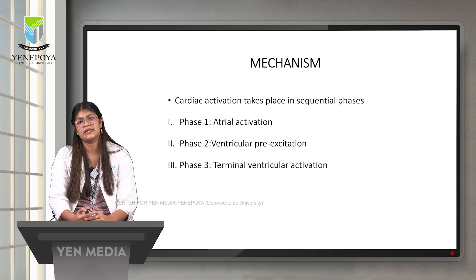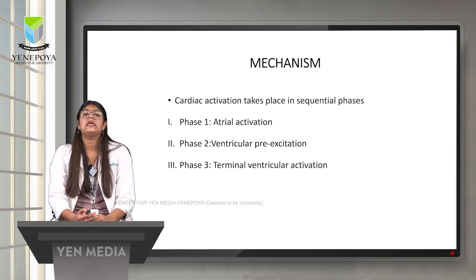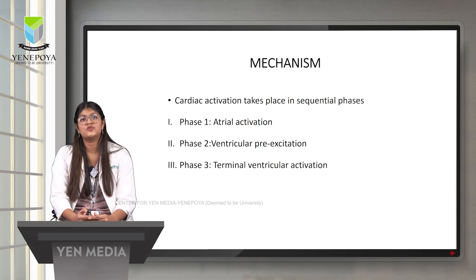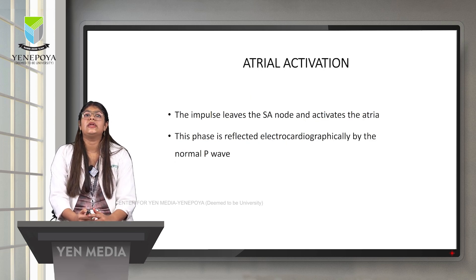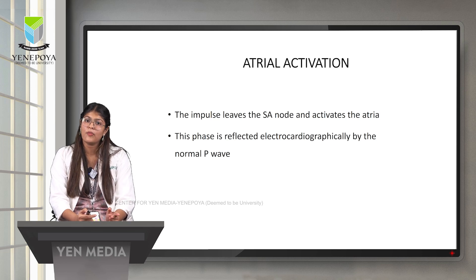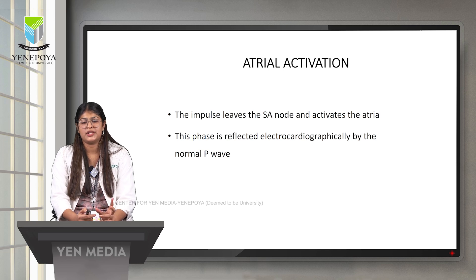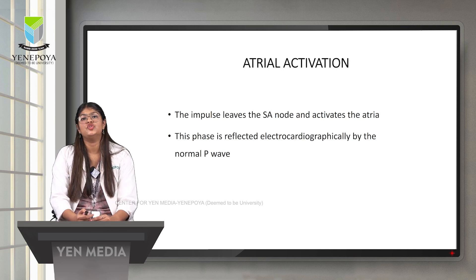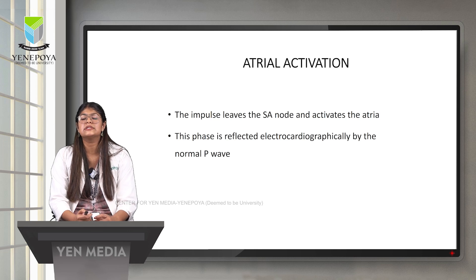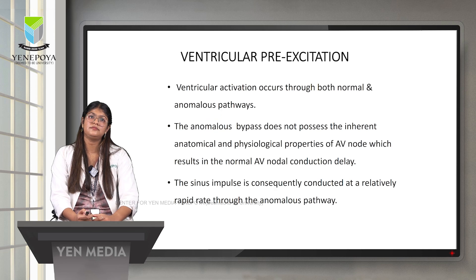The mechanism of WPW syndrome involves three sequential phases. Phase one is atrial activation: the impulse leaves the SA node and activates the atria normally, resulting in normal atrial contraction. This phase is reflected electrocardiographically by a normal P wave, as atrial activation occurs normally in WPW syndrome.